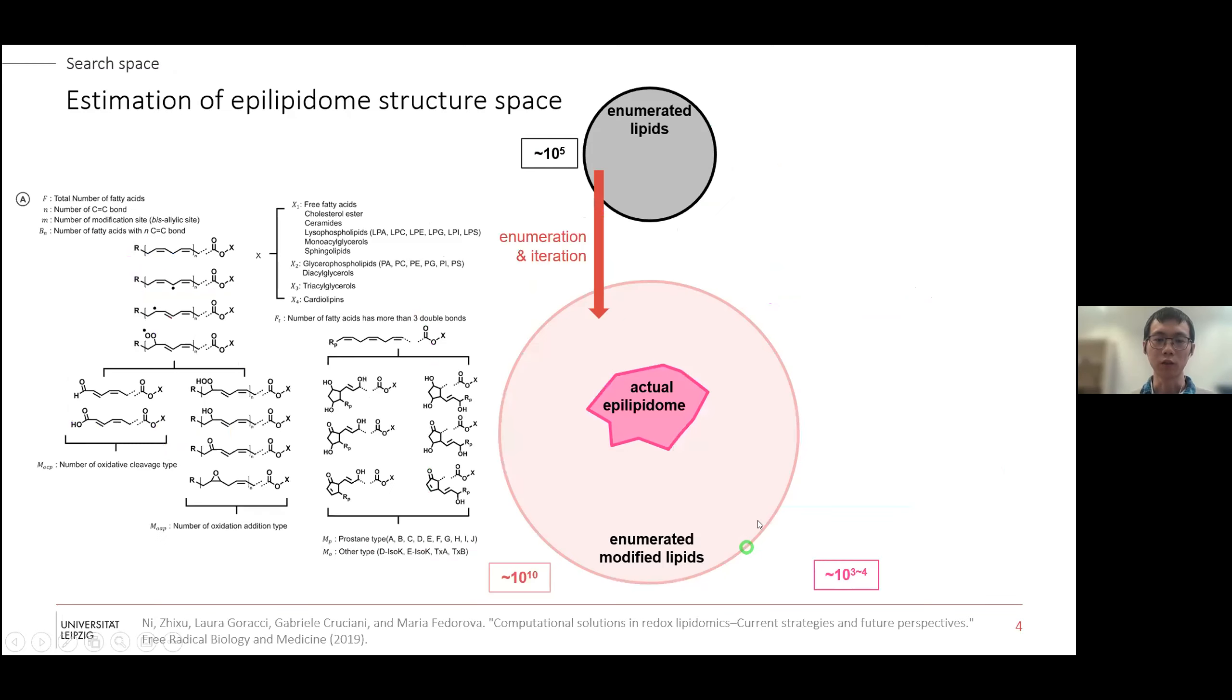We have in summary the search space issue and we need more complex identification algorithms. Let's have a look at the search space issues. Lipid Maps and other databases probably tells you the unmodified lipids around 10^5. If you enumerate all possible modifications including all these possible ring structures, the numbers will bump up to e to the 10, which is enormous. But the actual lipidome which you can possibly acquire and report is probably three thousand or tens of thousands. There's a huge gap if you try to use this number to identify the actual epilipidome.